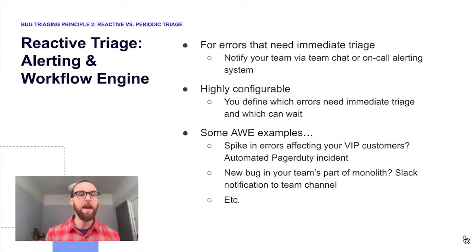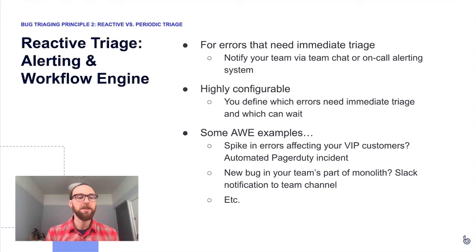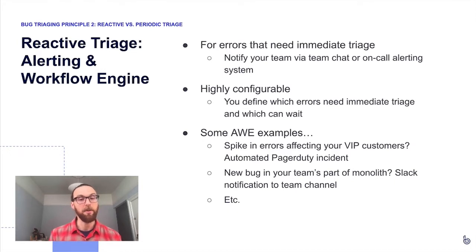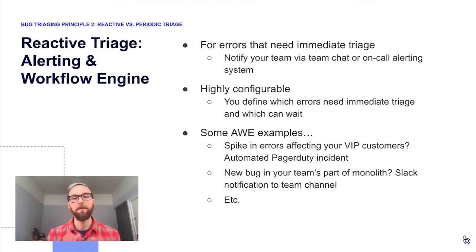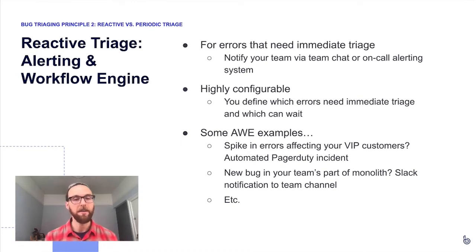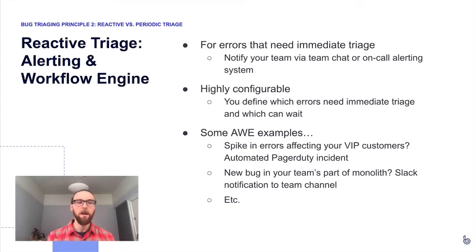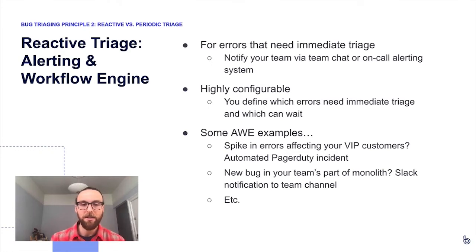When thinking about reactive triage, it's important to determine which subset of your errors should cause someone on your team to drop what they're doing and triage immediately. Once you've made that determination, you can configure BugSnag via the alerting and workflow engine to notify your team via team chat or an on-call alerting system whenever a bug matching your custom-defined criteria occurs. The alerting and workflow engine is highly configurable — you decide when BugSnag notifies you and through what means.